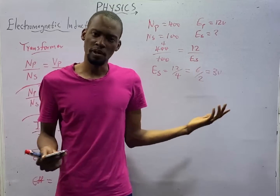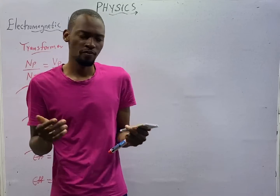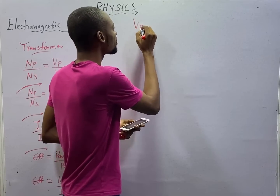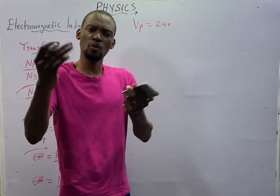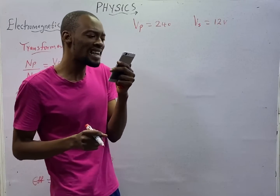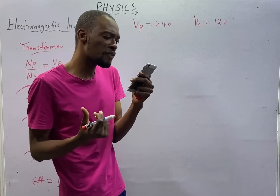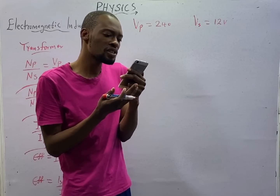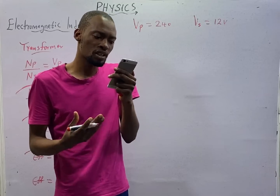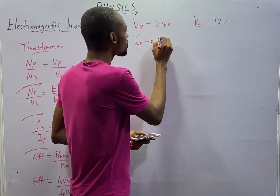If a transformer steps down from 240 volts to 12 volts, it means the primary voltage is 240 volts and the secondary voltage is 12 volts. It supplies a 12 volts, 24 watts lamp. What is the efficiency of the transformer if the current drawn from the supply is 0.12 amps? The current drawn from the supply is the primary current, so primary current is 0.12 amps and primary voltage is 240 volts.